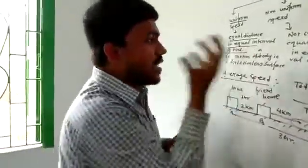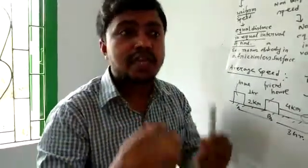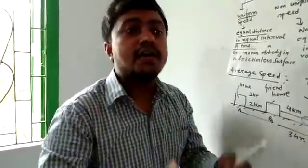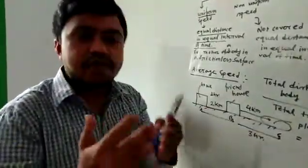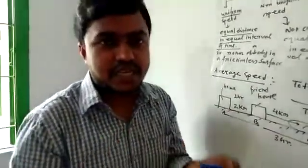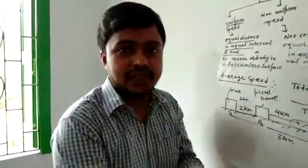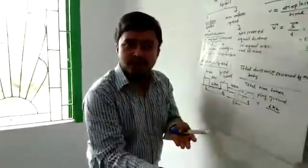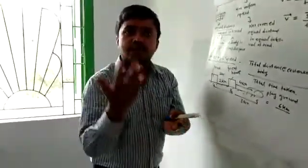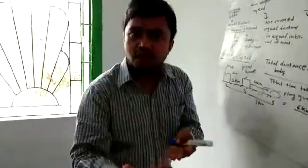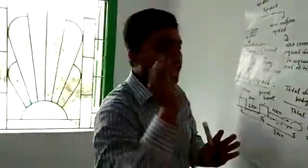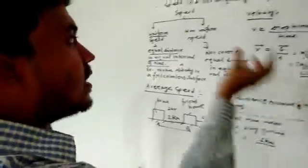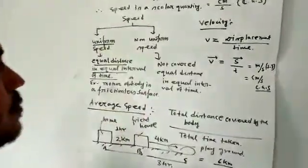If the particle covers equal distance in equal intervals of time, then the motion is said to be uniform motion. An example is the motion of a body on a frictionless surface. On a frictionless surface there is no opposing force, so the particle covers equal distance in equal intervals of time — this is a suitable example of uniform speed.